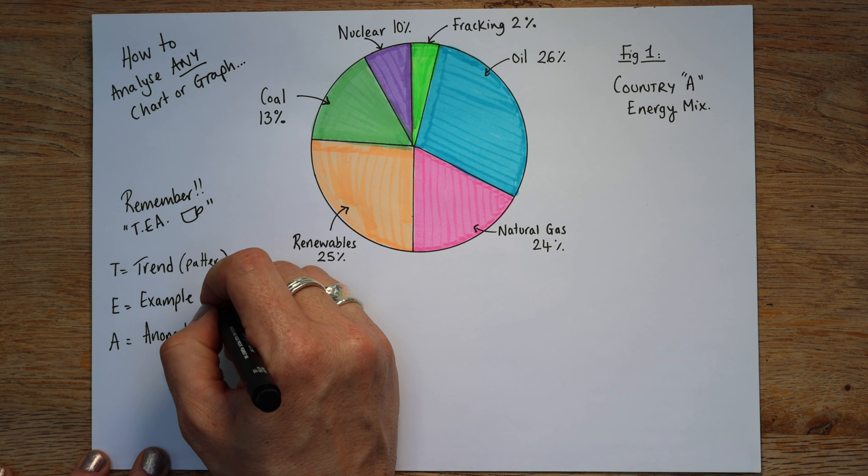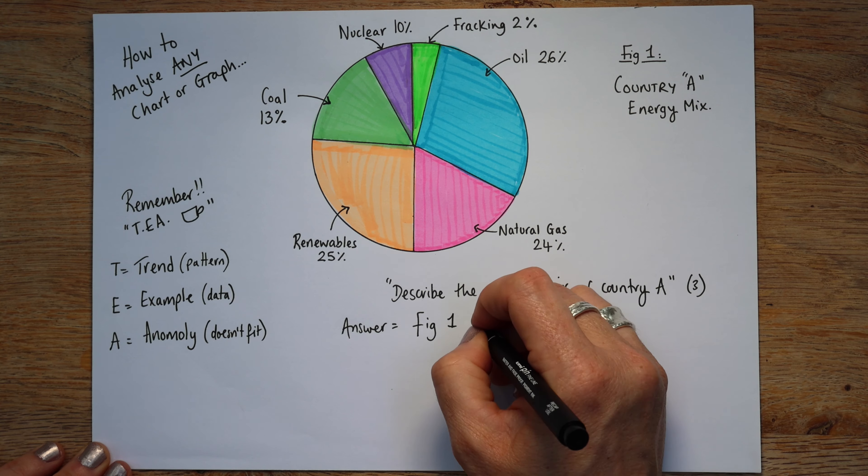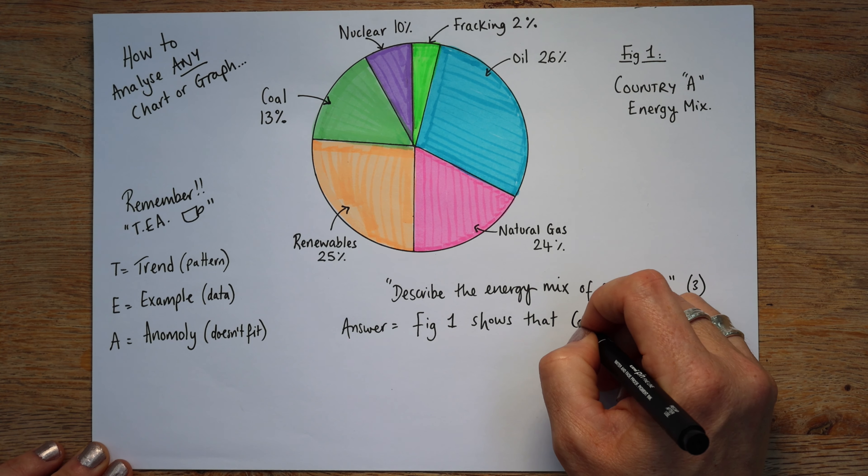So what you do with any graph you get is answer it with TEA: Trend, Example, Anomaly. T equals Trend, E equals Example, and A is Anomaly. If you do this, you're guaranteed to do well and get full marks. Trend is the pattern — what is the overall pattern the graph is telling you. An example is where you include data and pick out a specific example. And an anomaly is just something that doesn't fit, something that doesn't quite match the rest of the graph — is there anything unusual?